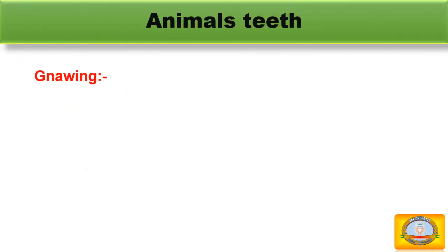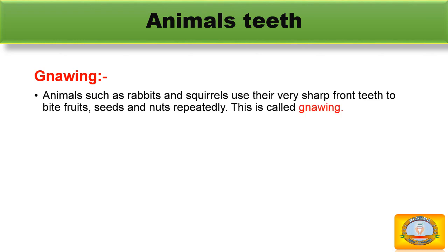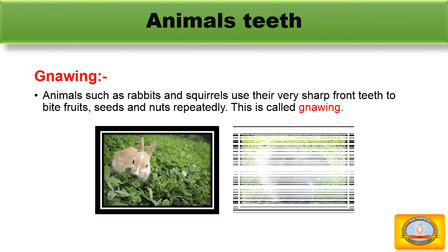Animals such as rabbits and squirrels use their very sharp front teeth to bite fruits, seeds, and nuts repeatedly. This is called gnawing. This figure shows gnawing.